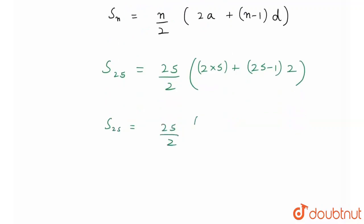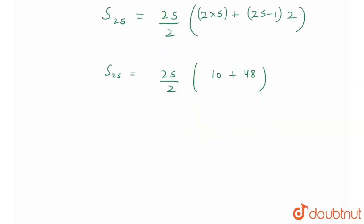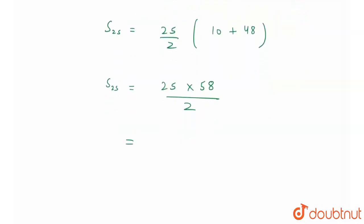Therefore, I'll get sum of 25 terms is equal to 25 by 2 into 10 plus 48. Or I can say I'll get sum of 25 terms to be equal to 25 multiplied by 58 divided by 2, which is equal to 725. Therefore, 725 is the required answer. Thank you.